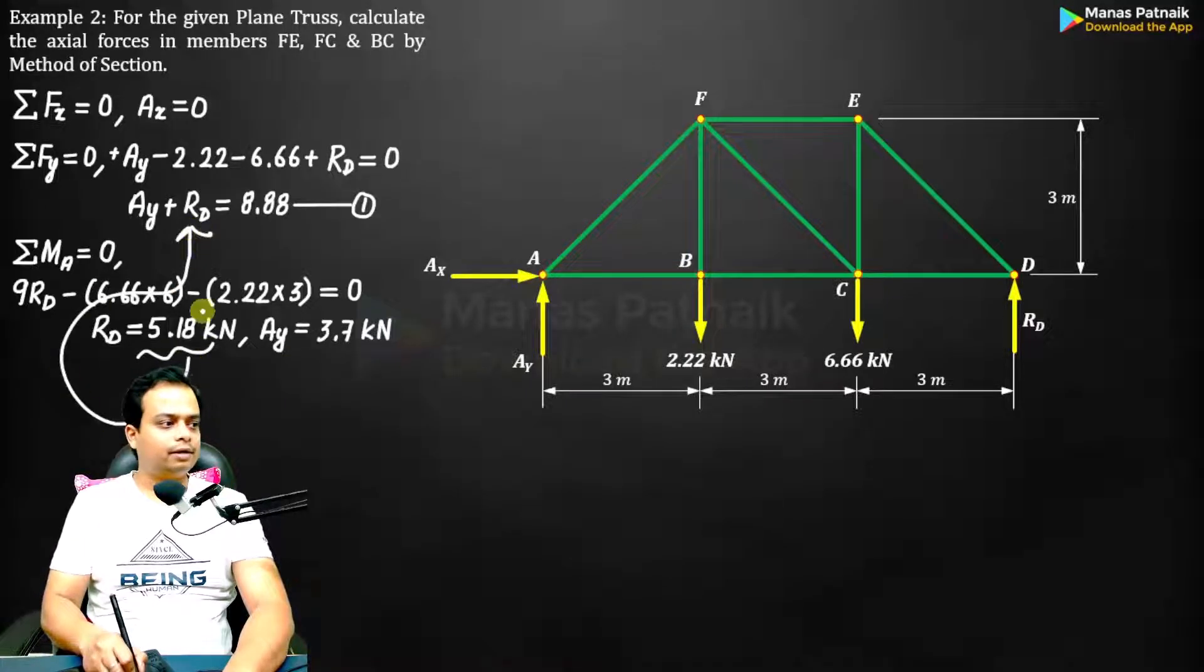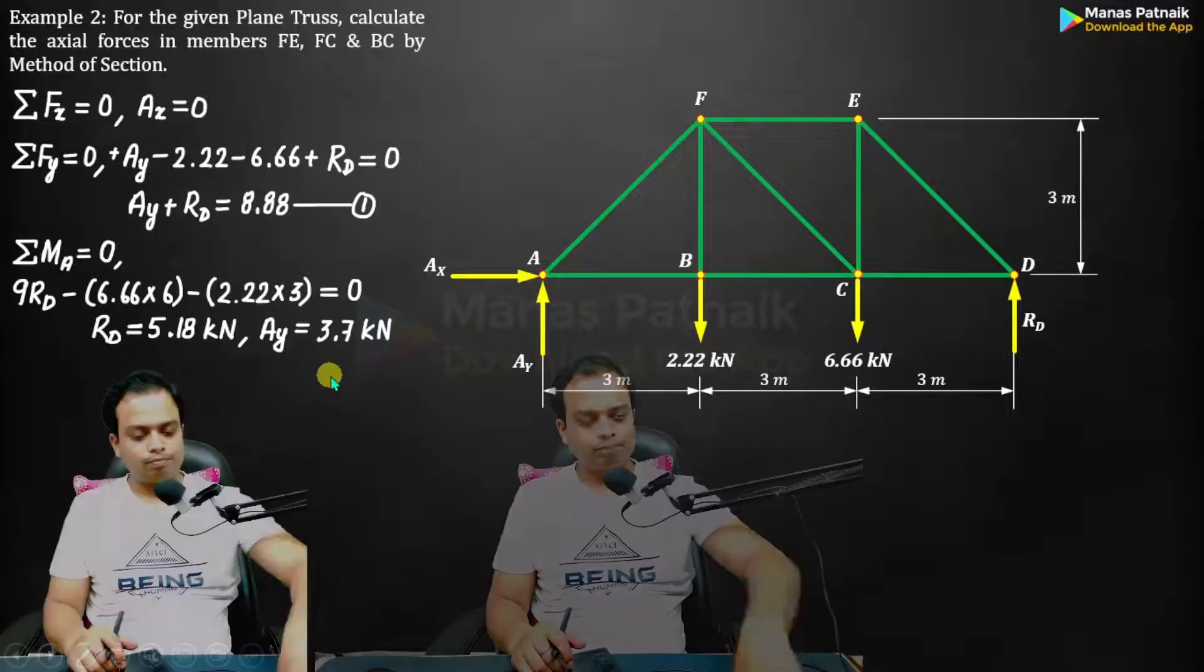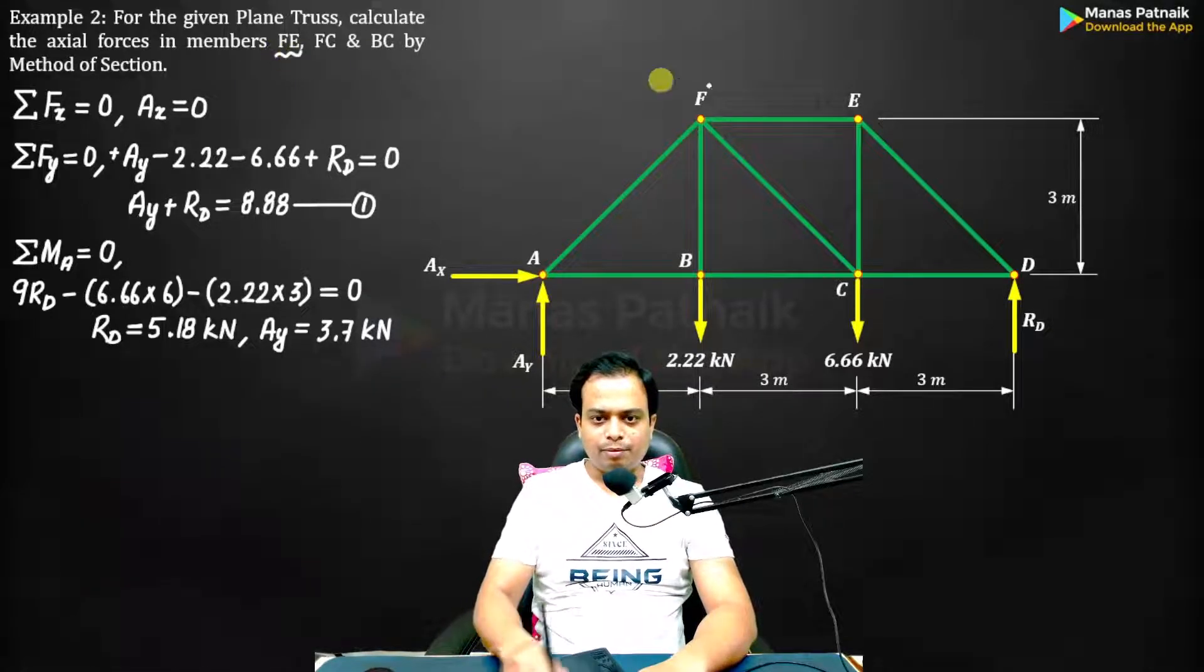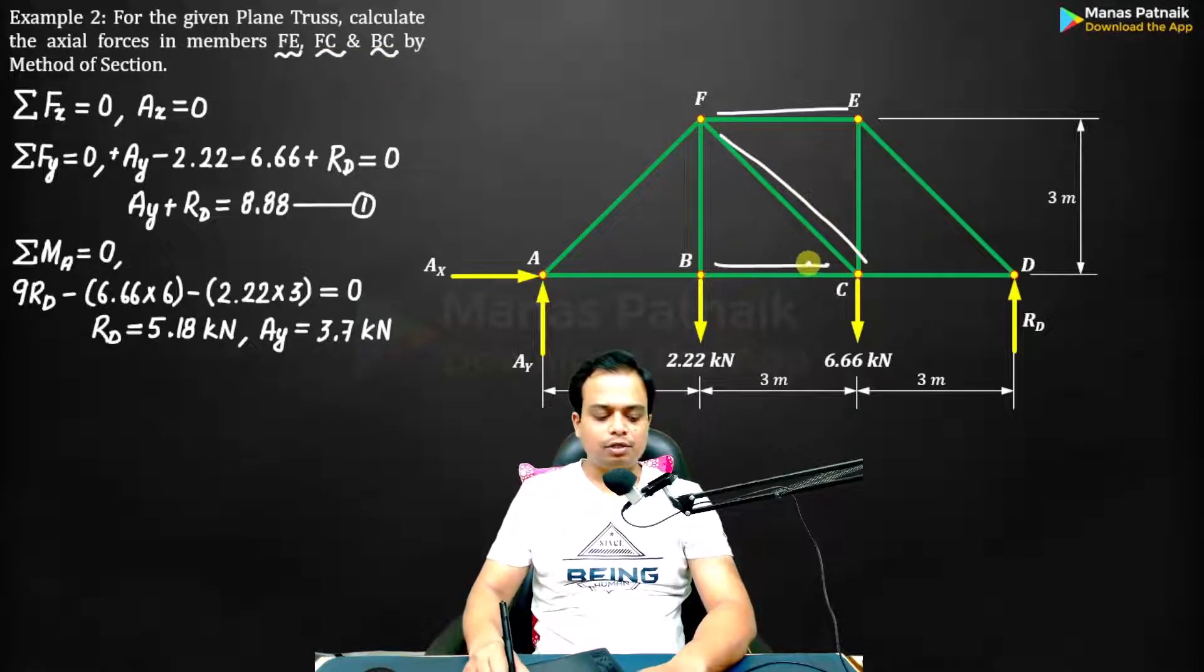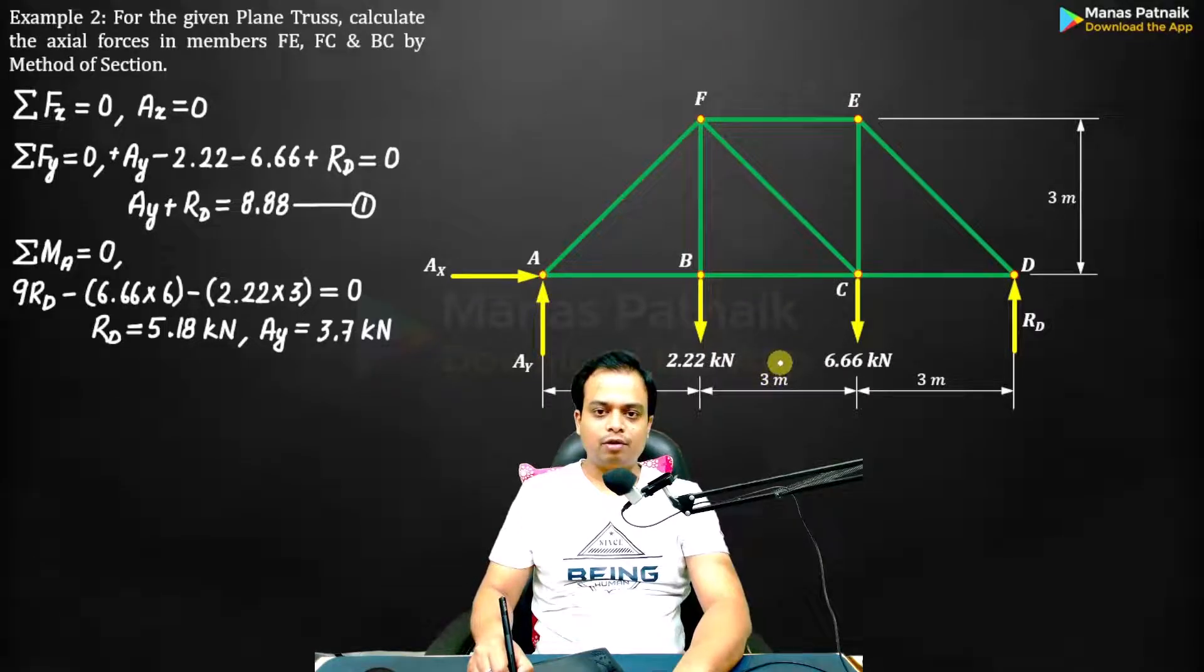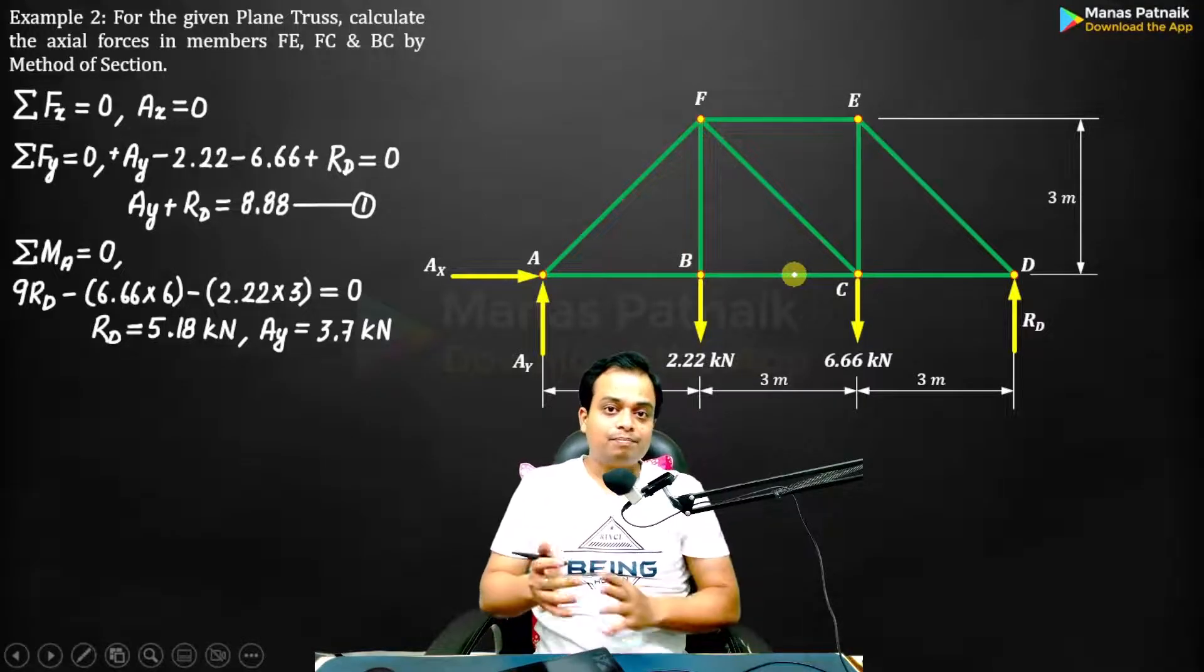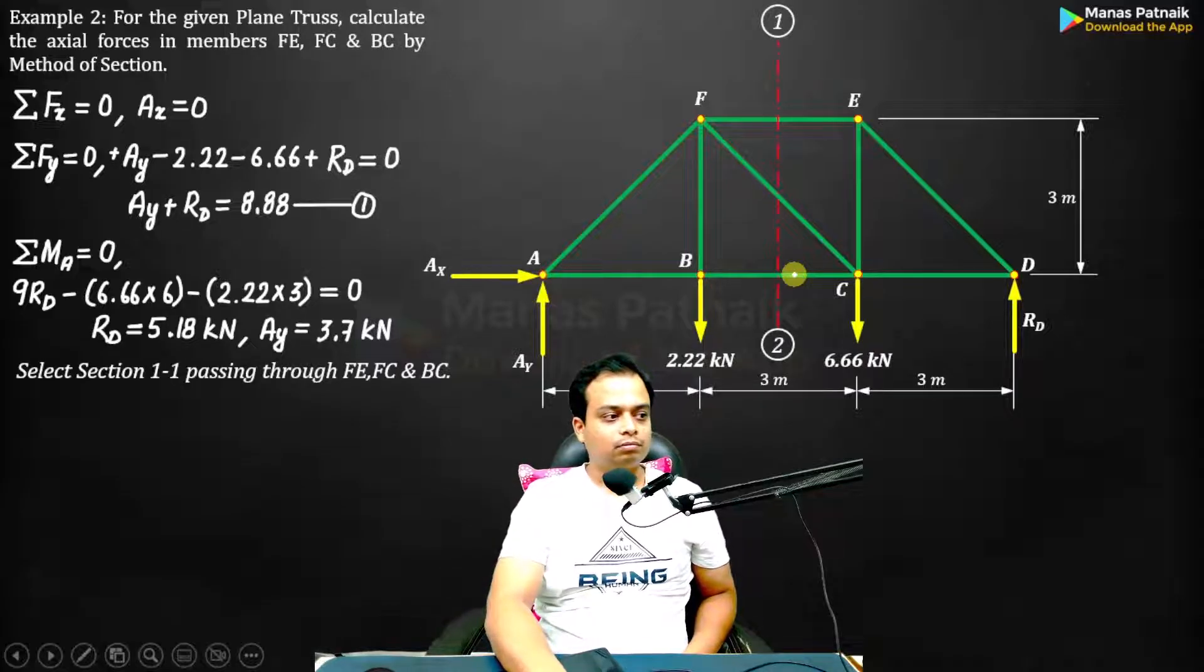Put this value over here and you will get the value of AY. This is what you get. Done. Now what we are going to do is watch. We are supposed to find forces in members FE, FC, and BC. So let me pass a section through these members. Make sure that the number of members cut are only 3, not more than 3. Here we go. Easy.